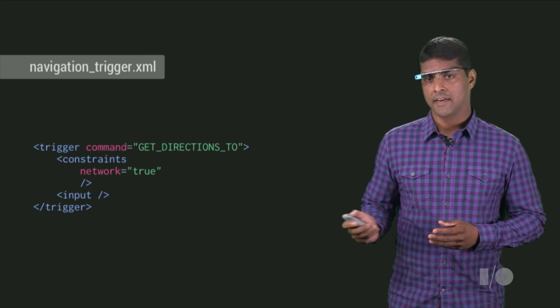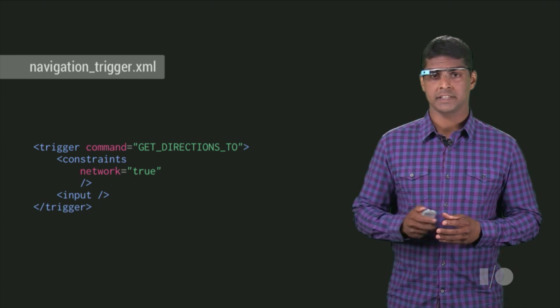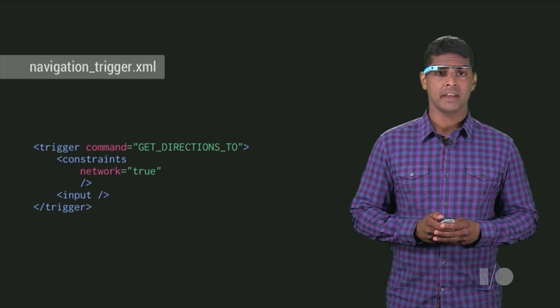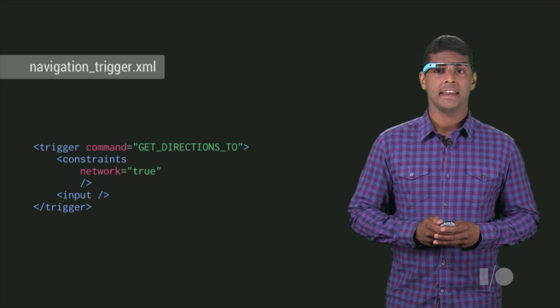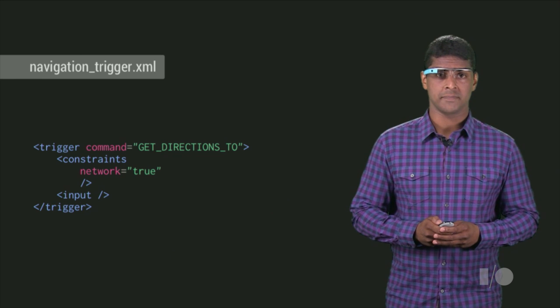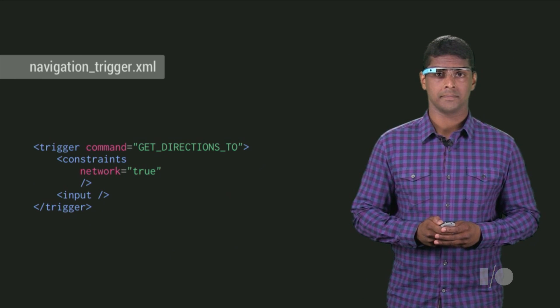Here, navigation-trigger.xml uses the 'get directions to' command, requires a network connection, and needs open-ended voice input when launching.